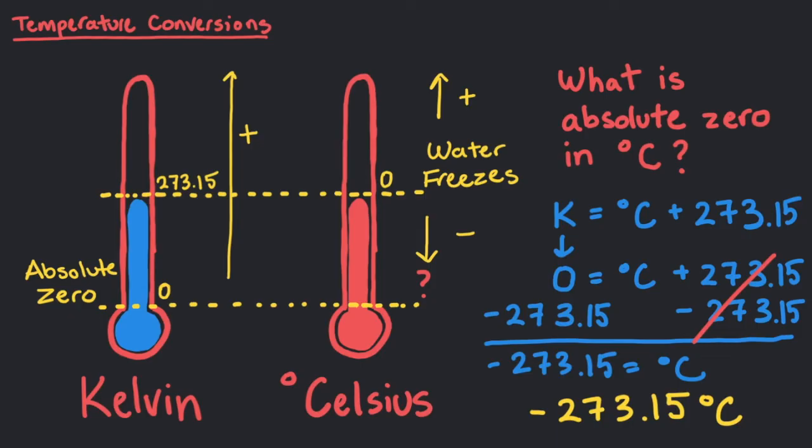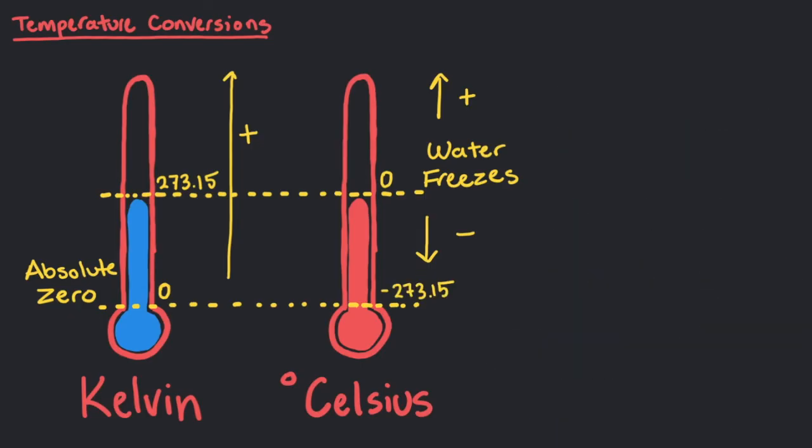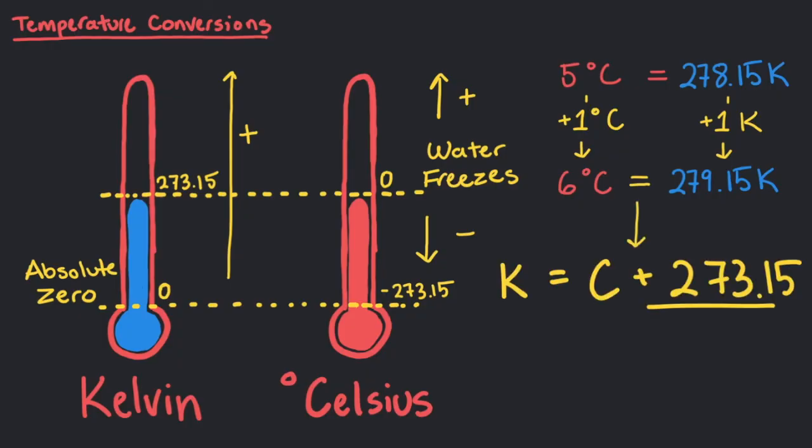It's important to note that the spacing of temperature values in Celsius and Kelvin is the same. If you change the temperature by one degree Celsius, you also change it by one Kelvin, which allows us to have an equation that only adds 273.15. This is unlike Fahrenheit, where Celsius and Kelvin are nine-fifth the size of one degree Fahrenheit.